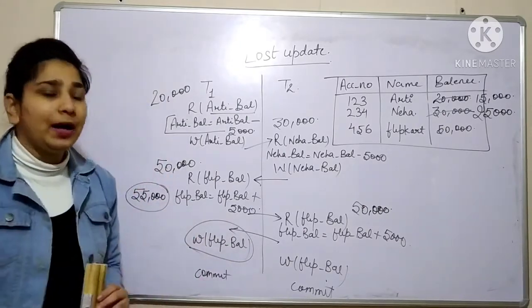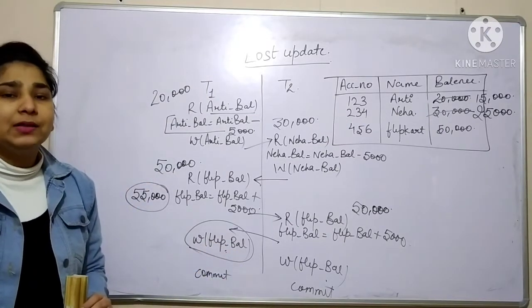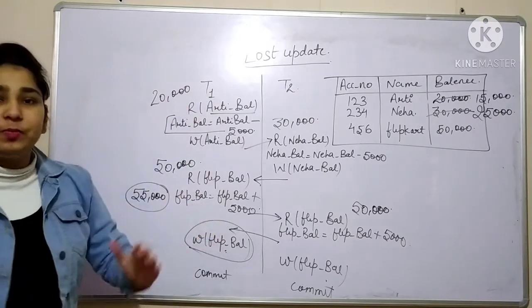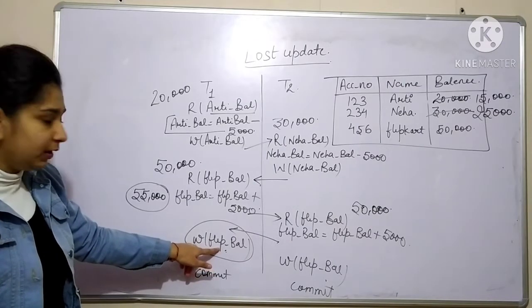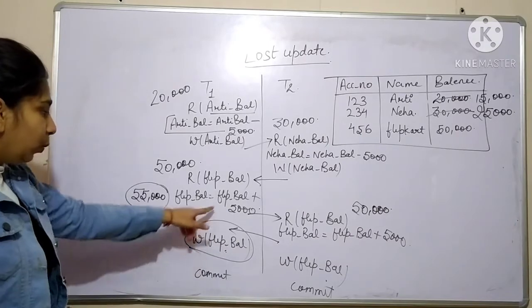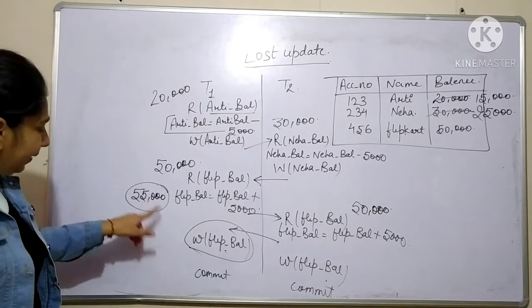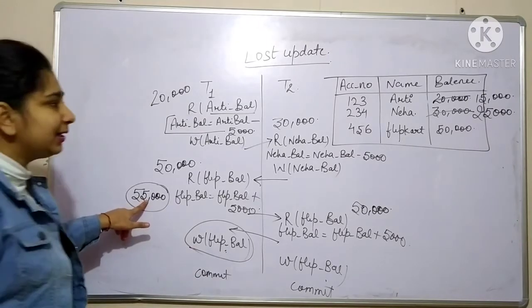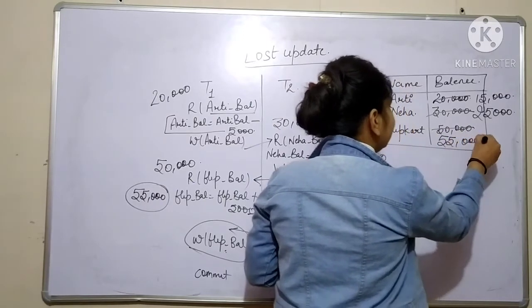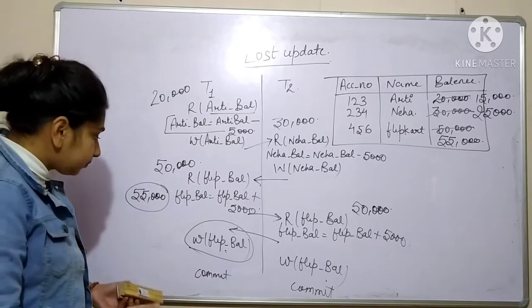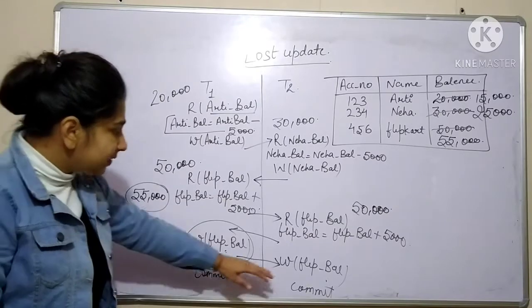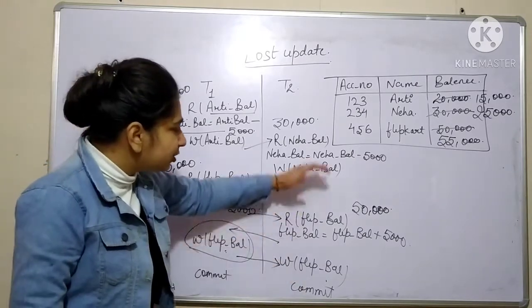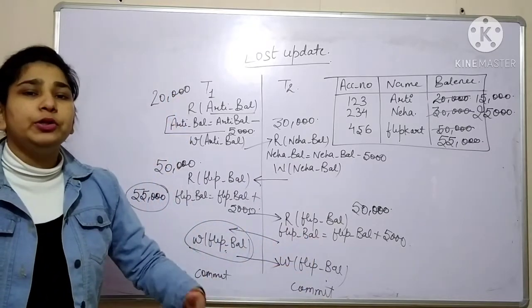Now transaction T1 does the write operation — whatever changes it has made, it now updates that change in the database. The value in T1's main memory is 55,000, so it performs the write operation and updates the database to 55,000. Then we switch to T2, which also wants to perform the update operation in the database.